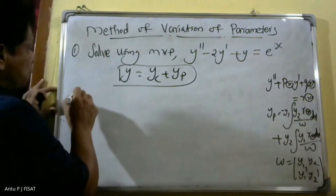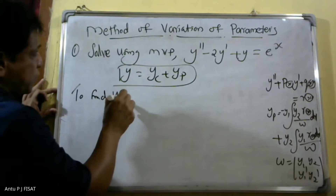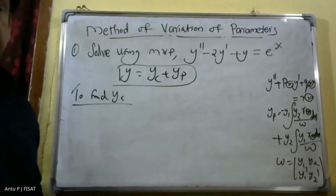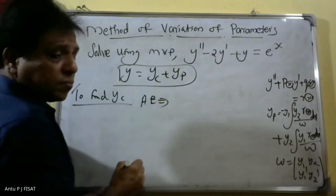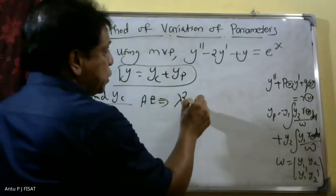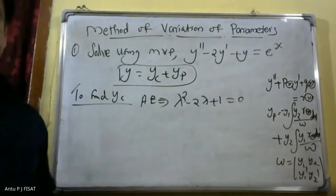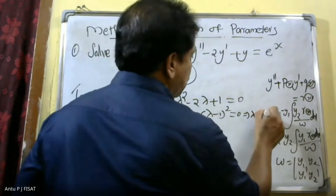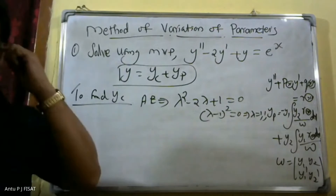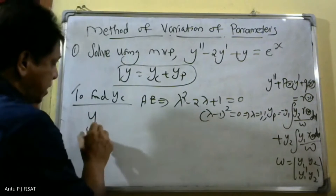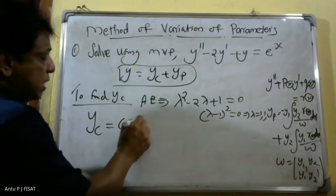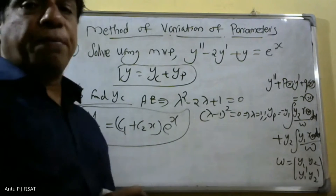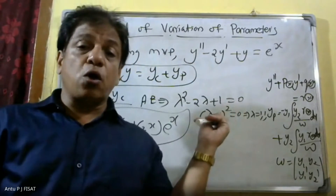First we find out the complementary function y_c. We write the auxiliary equation: lambda squared minus 2 lambda plus 1 is equal to 0. This is a quadratic equation. This factors as (lambda minus 1) squared equals 0, therefore lambda equals 1, 1 — the roots are repeated. Since the roots are repeated, the solution y_c is equal to (c1 plus c2 x) times e raised to x. This is the complementary solution.